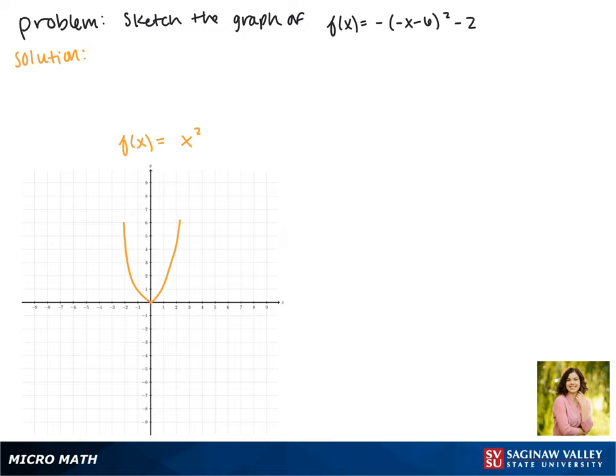Now in our original function we want x to be by itself, so we're going to rewrite our equation as f of x equals the negative of negative times x plus 6 all squared minus 2.